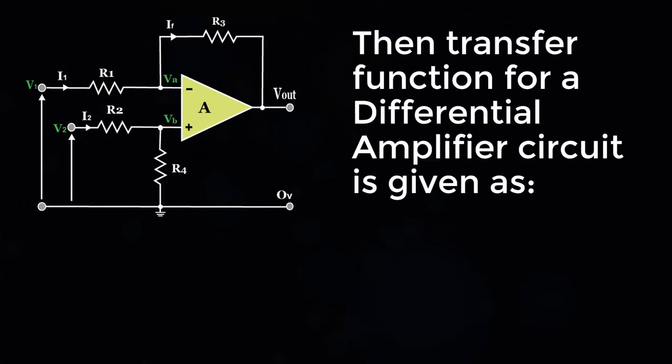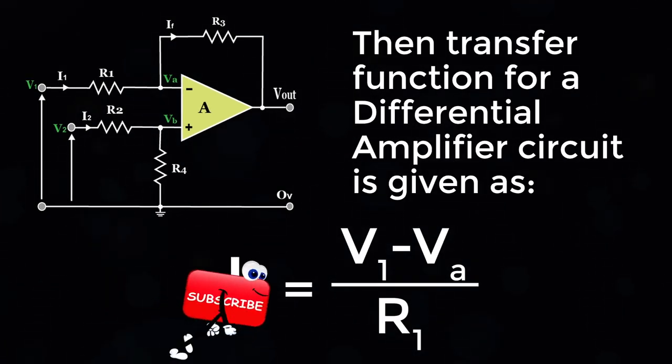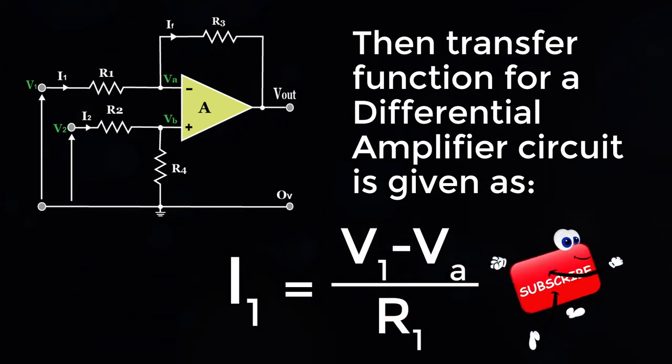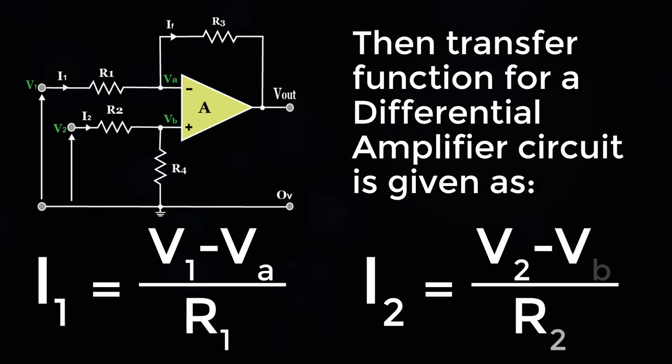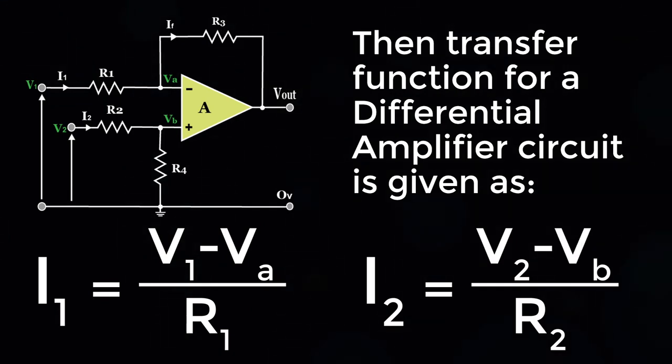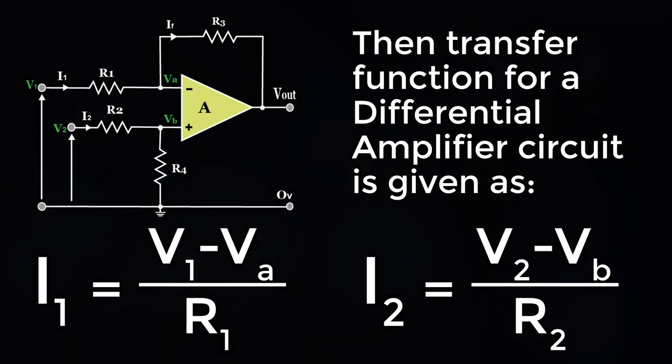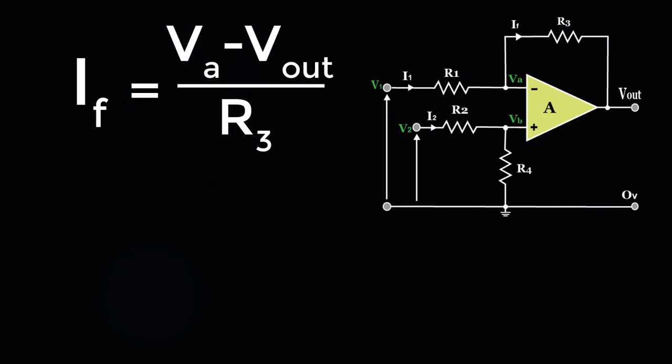Then the transfer function for a differential amplifier circuit is given as: I1 equals V1 minus VA by R1, I2 equals V2 minus VB by R2, If equals VA minus Vout by R3.